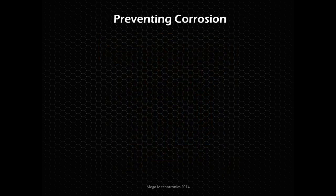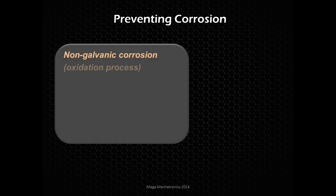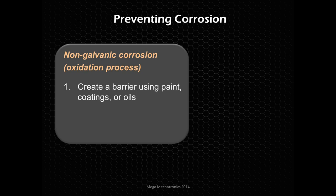Preventing corrosion is very important. For non-galvanic corrosion — that oxidation process — we want to create a barrier between the atmosphere, water, and chemicals in the air by using paint, coatings, powder coating, galvanization, or oil. For your steel stock, if you don't want it to rust, just put a coat of oil on it.